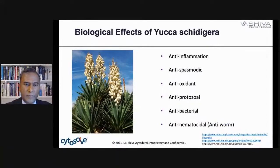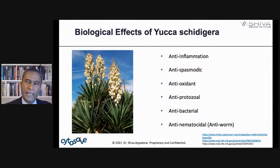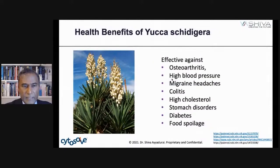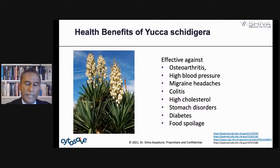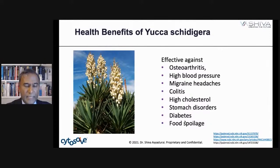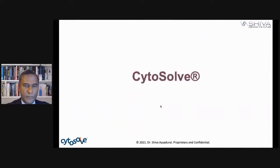What are the biological effects of yucca? Anti-inflammatory, anti-spasmodic, anti-oxidant, anti-protozoal, anti-bacterial, and anti-nematicidal — meaning anti-worm, against nematodes. These are the biological and health benefits. Yucca is effective against osteoarthritis, which is what we're covering today. Yucca also has effects on high blood pressure, migraine headaches, colitis, high cholesterol, stomach disorders, diabetes, and it's also used as a food preservative.